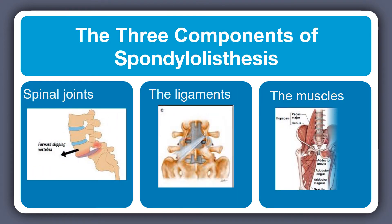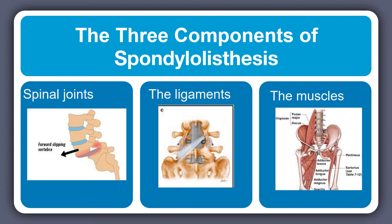The components of spondylolisthesis involve the spinal joints — the slippage of the vertebral body above compared to the one below. All of these spinal joints are covered in ligaments, so the ligaments must be compromised or damaged in some way to allow this slippage to happen. Usually there's what's called a PARS defect, which is a crack in an aspect of the vertebral body that allows this slippage to occur. The muscles are also holding these joints in place, so when there is damage, the muscles are not able to hold the joint in place and it slips forward.